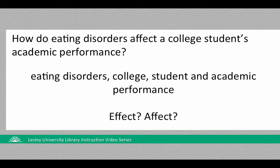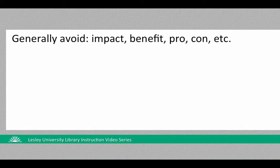You'll notice I did not choose either "effect" in the first research question or "affect" in the second. I did not choose those keywords because the database will search for exactly what we put in the search box. That means a great article about media, violence, and children may be excluded from the search results just because it didn't have the word "effect" in it. You'll generally want to avoid adding words like impact, benefit, pros, and cons to your keyword searches.